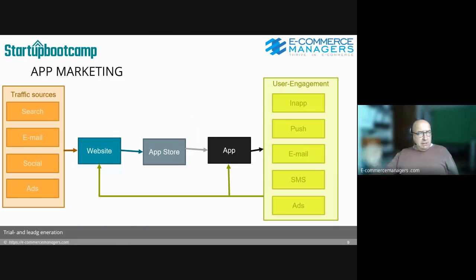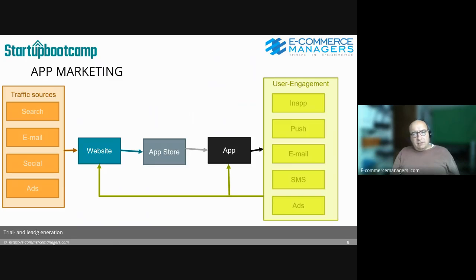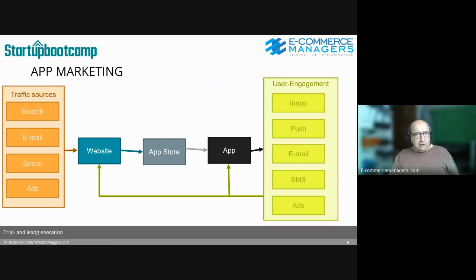Then in the last session, I believe last Monday, we talked about app marketing. You have traffic sources, you send them to your website, from your website to your app store if you don't have direct app store campaigns running. From your app store, after download, they start using your app and based on the interaction signals you get from your analytics, you want to send them certain messages — it can be in-app, push messages, email messages, sometimes SMS, and lastly advertising in the form of retargeting.